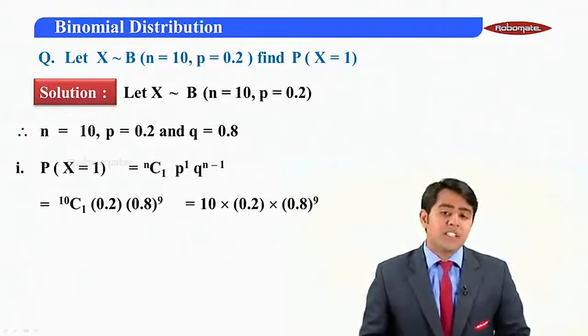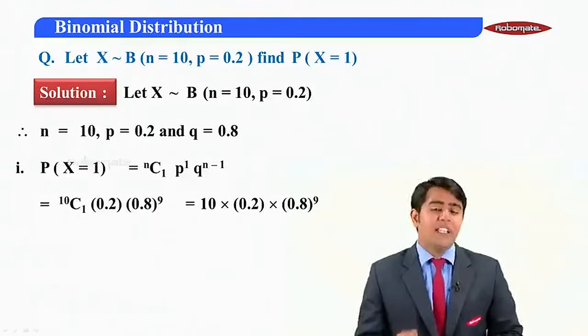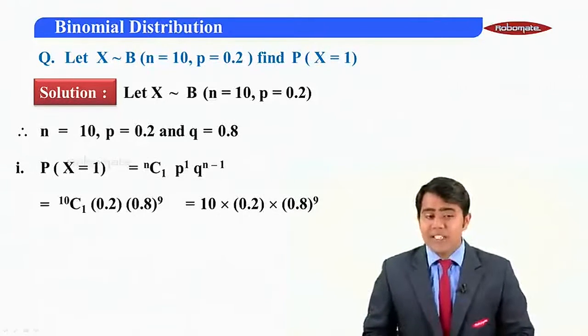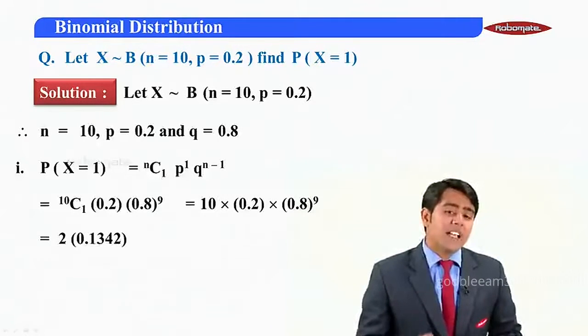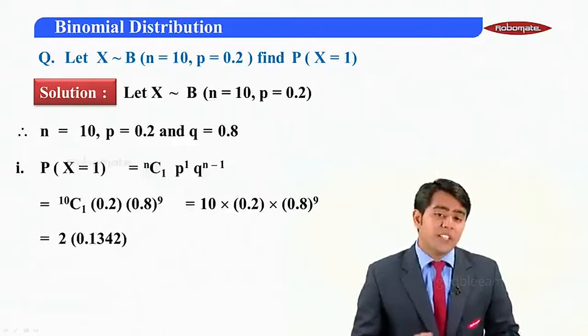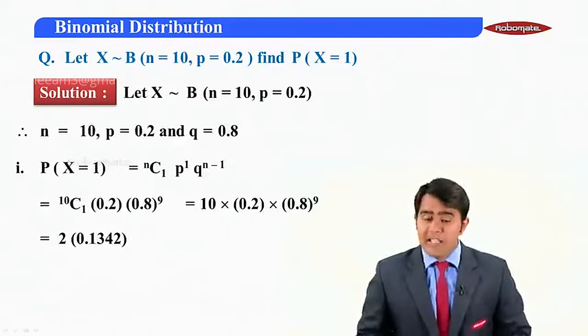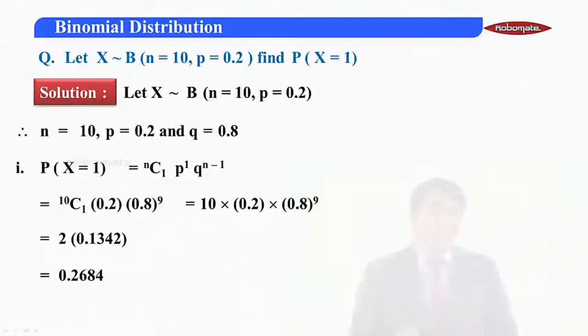On further calculation, the values will now turn out to be as 10(0.2)(0.8)^9. Now, this calculation has to be done using logarithmic table to reduce it further. But here, we have the values as follows. I get the value on simplification as 2(0.1342). So, on multiplying these two values, I get the answer as 0.2684. So, this is the probability of X equal to 1.